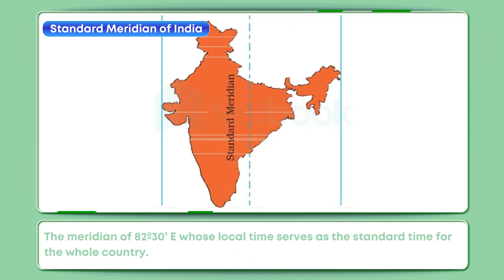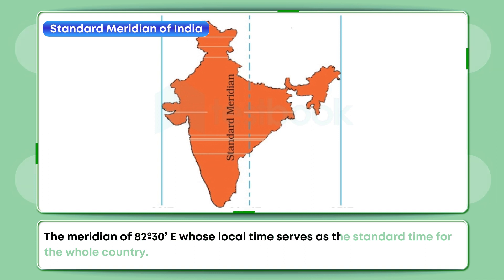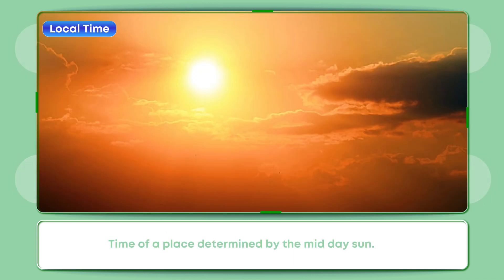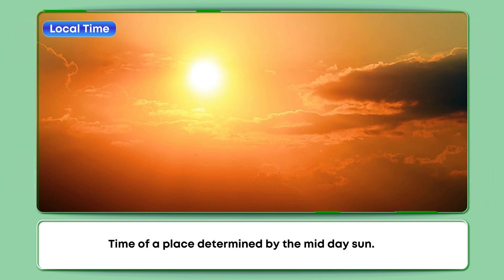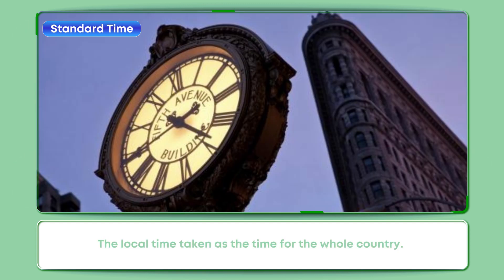Standard Meridian: The meridian of 82 degrees 30 E whose local time serves as the standard time for the whole country. Local time: Time of a place determined by the midday sun. Standard time: The local time taken as the time for the whole country.